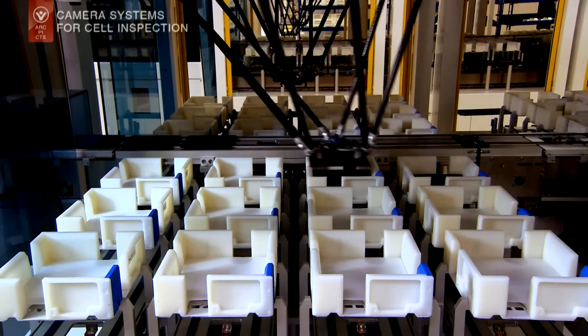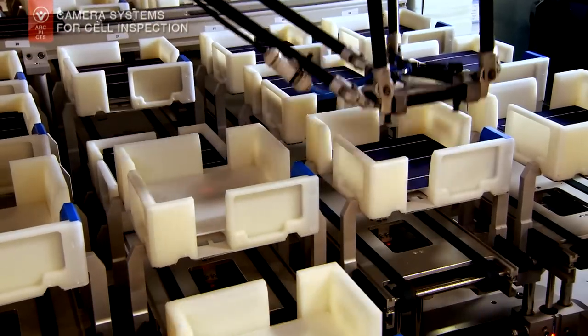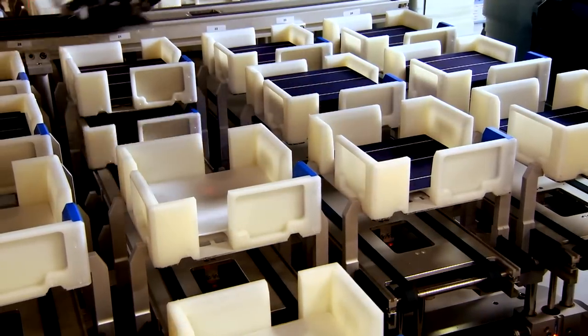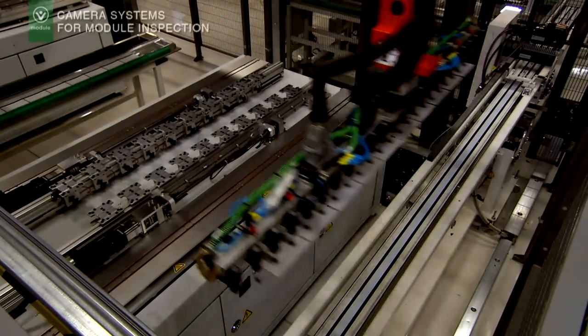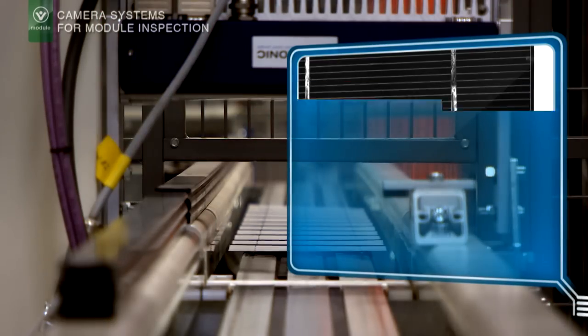Now the cells are ready to be integrated into complete modules. Vinspec Solar Systems are also used in module production to inspect all relevant steps of production and make extensive automation possible.